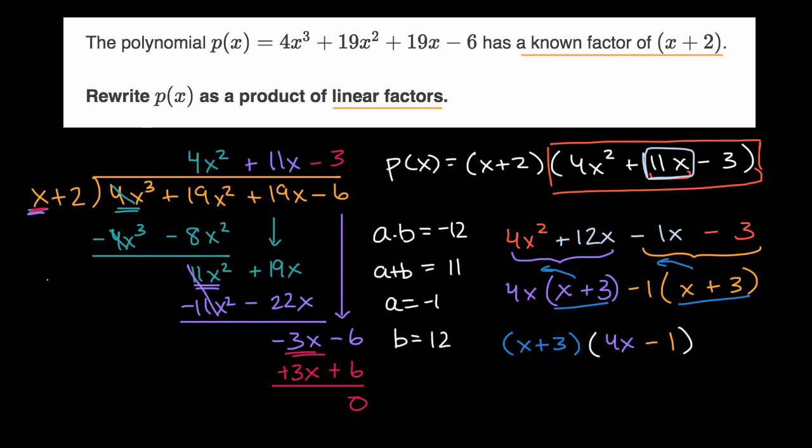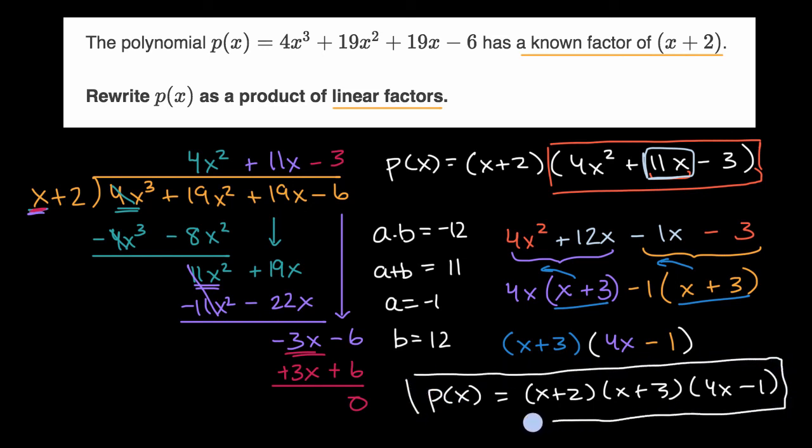And so now I can put it all together. I can rewrite p(x) as a product of linear factors. p(x) is equal to (x + 2) times (x + 3) times (4x - 1). And we are done.